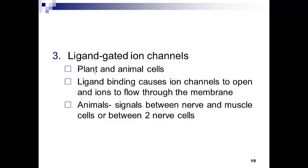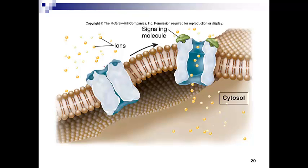Ligand-gated ion channels — you've seen these in anatomy and physiology. The binding of a ligand, like a neurotransmitter, causes the receptor to open and allow the flow of specific ions from high to low concentration. In animals, nerve and muscle cells show this phenomenon, where calcium plays an extremely important role in regulating the contracted state of the muscle. The channel is closed and ions cannot flow until an appropriate signal binds; when it does, the channel opens and ions flow freely down their gradient, mounting a cellular response.